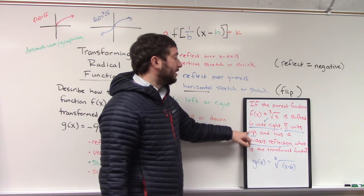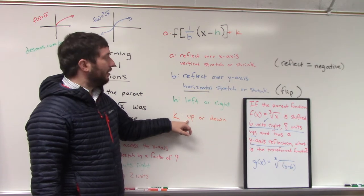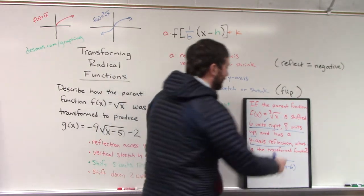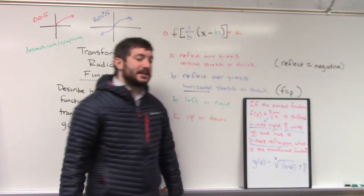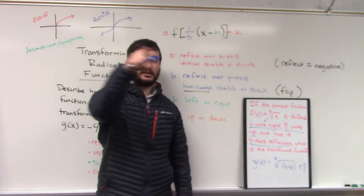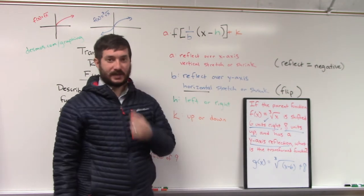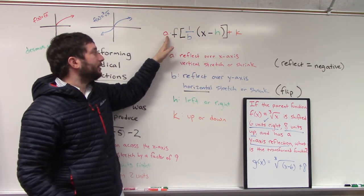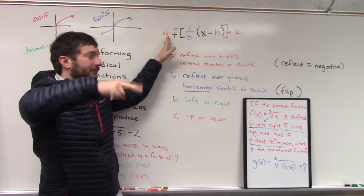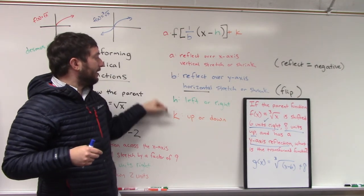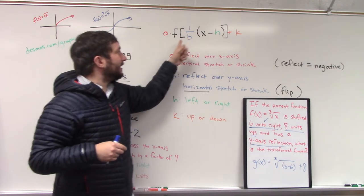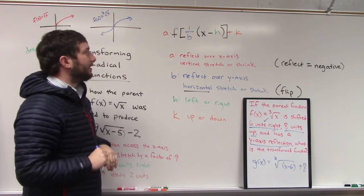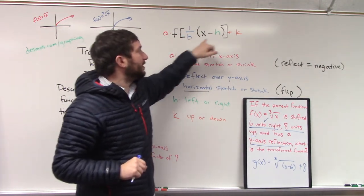8 units up changes K, and because we're going up we should be adding a number off to the side — in this case, add 8. Notice that 8 is not under the cube root symbol — it's off to the side, not inside the function. Anything that happens vertically, like moving up or down, vertically stretching or shrinking, or flipping over the x-axis — those are all on the outside and are vertical movements. Everything inside the square root or cube root deals with left or right, or horizontal stretches or shrinks. Outside means vertical; inside means something horizontal.